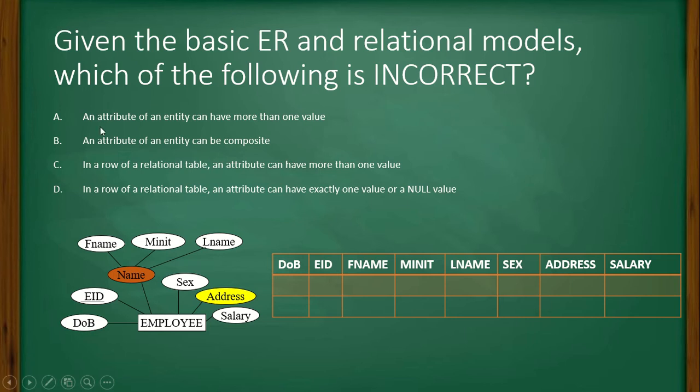So look at the options. An attribute of an entity can be more than one value. Yes. This attribute of this entity is having more than one value. This is true. Correct.